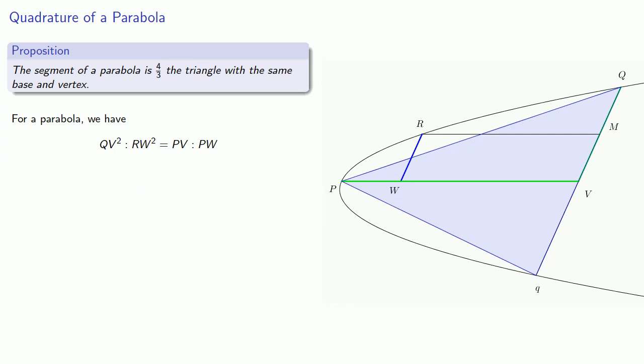Now by construction, QV is twice MV, which is the same as twice RW. And so this ratio over on the left, well that's really a 4 to 1 ratio. And so RM is 3/4 PV, and 4/3 RM is equal to PV.